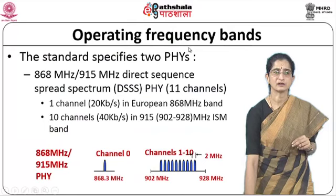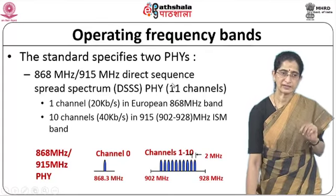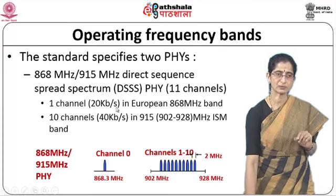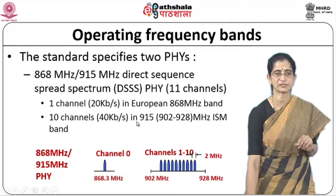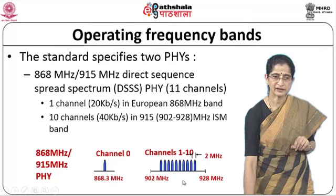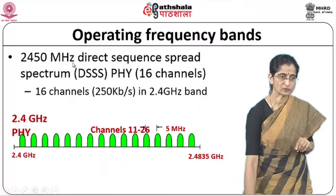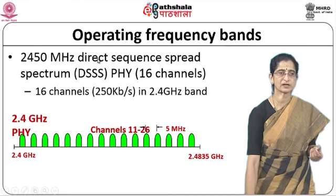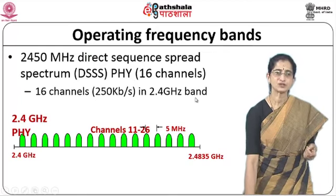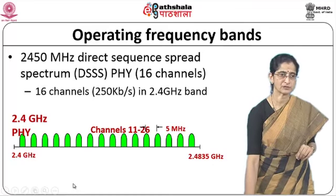There are two different physical layers supported. One is the 868–915 MHz Direct Sequence Spread Spectrum (DSSS) supporting 11 channels: one channel at 20 kbps in the European 868 MHz band and 10 channels at 40 kbps in the 902–928 MHz band, separated by about 2 MHz. The second physical layer is the 2450 MHz DSSS with 16 channels at 250 kbps in the 2.4 GHz band, with 5 MHz separation between channels.